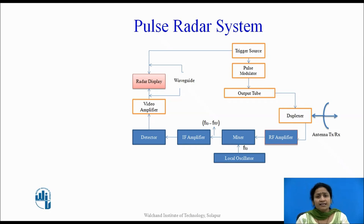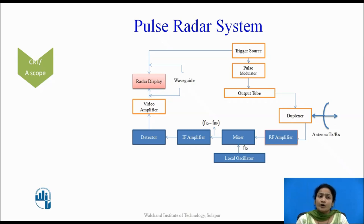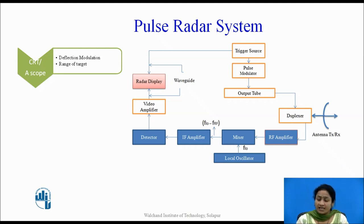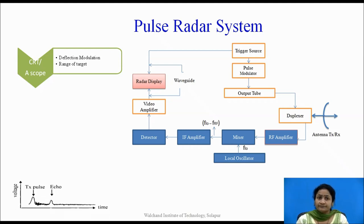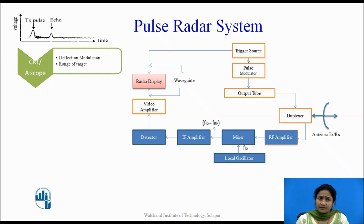The radar display is used to represent the signals received by the superheterodyne receiver. The radar display may be a CRT-based A-scope. The A-scope device works on deflection modulation and only determines the range of the target — it provides the distance of the target from the location, represented as received power versus time on X and Y axes.